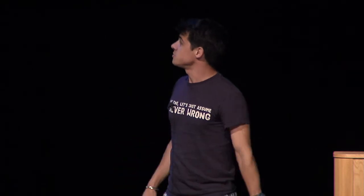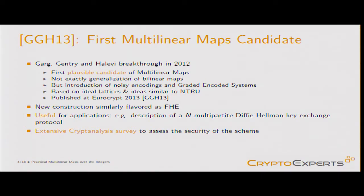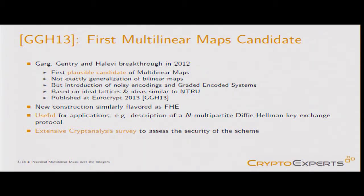So it was an open problem for ten years. At the end of last year, there was a breakthrough result by Garg, Gentry, and Halevi proposing the first plausible candidate of multilinear maps. It's not exactly a generalization of bilinear maps — they have noisy encodings, it's the end of deterministic encodings. They introduce a graded encoding system based on ideal lattices, with ideas similar to NTRU, published this year at EuroCrypt. It's similarly flavored as fully homomorphic encryption, and it is useful for applications. They describe N-multiparty key exchange. There is no security proof in the paper, but they provide extensive cryptanalysis to assess the security.